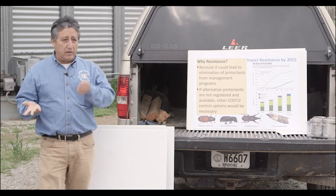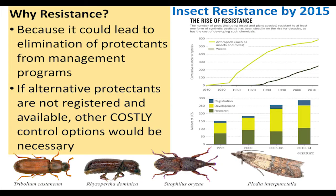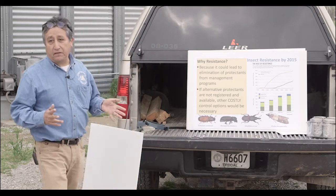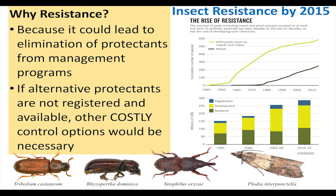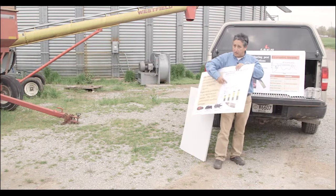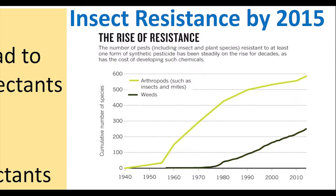Before going into the use of insecticides, it's important to remember that resistance in stored products also happens, and that leads to a lot of problems. It reduces the number of materials we can use. This graph shows that during the last 50 to 60 years there was a big increase in resistance. The green line is the number of insect species with resistance — starting in 1950 there were very few; by 2010 there were 600 species resistant to insecticides.